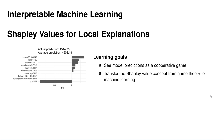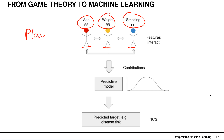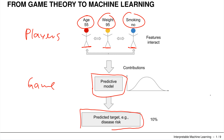We will see model predictions as a cooperative game and transfer the Shapley value concept from game theory to machine learning. In game theory Shapley values we had players, and now we will use features — for example age, wage, and smoking — as players, and we will treat the predictive model as our game. The predicted target for a single observation is treated as the payout in the game.